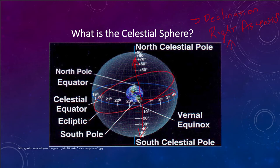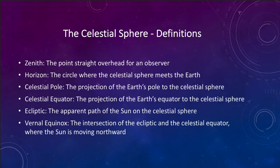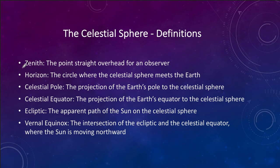Let's look at some of these definitions. We have the zenith, which is the point straight overhead — exactly overhead for wherever you are on the Earth. So if you lay down on the ground and look straight up, you are looking at the zenith. There may or may not be an object there, and that will vary depending on where you are on the Earth.